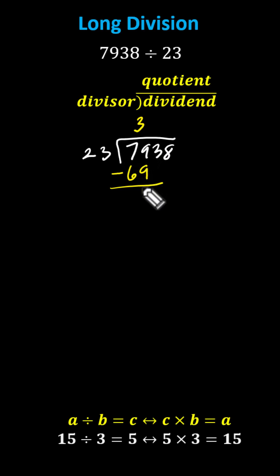If it's more than 23, it's not correct, and we should increase the digit in the quotient. 79 minus 69 is 10, 10 is less than 23, and therefore the three is correct.